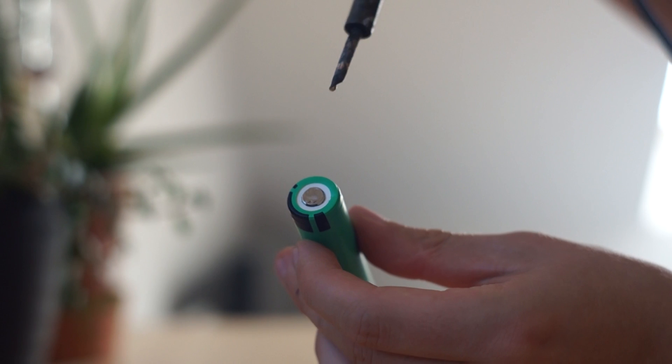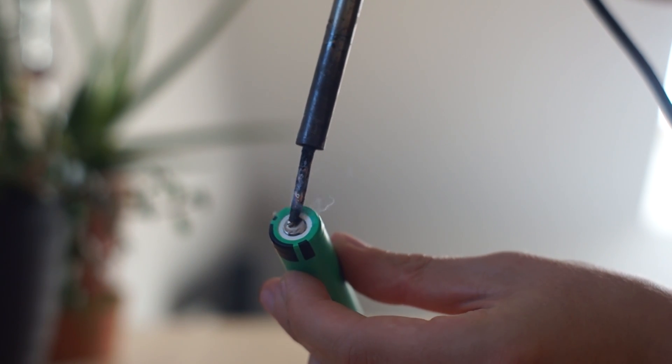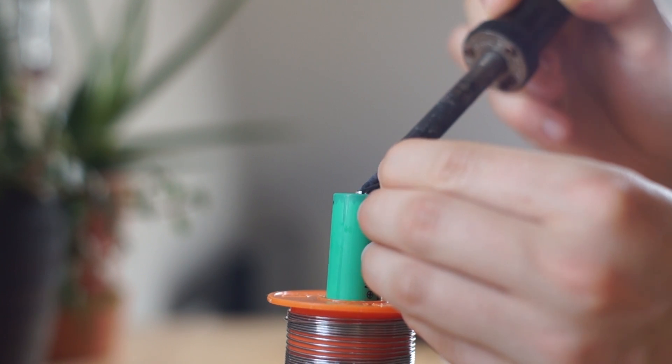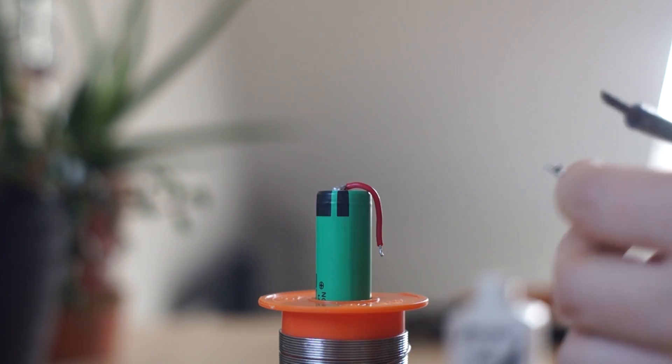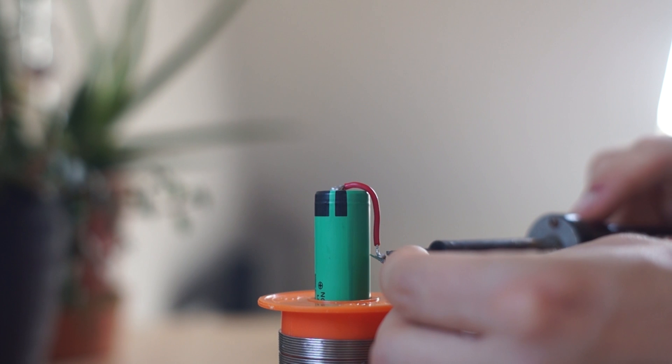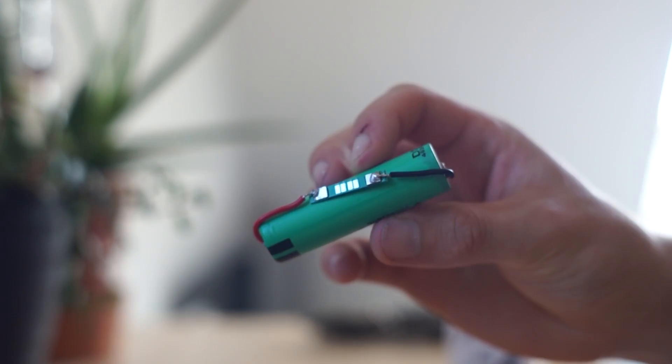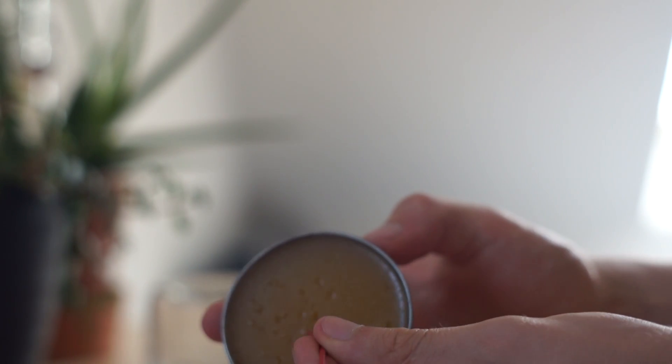So to start things off, we're going to solder on two wires for the 18650 battery, and we're going to use a bit of flux just to make this process easier. Next up we're going to solder on the battery protection circuit, so we're going to solder the battery positive and battery negative terminals to the wires that we just soldered onto the battery.